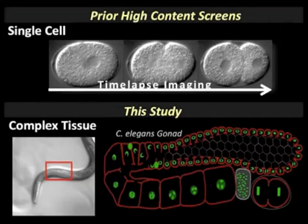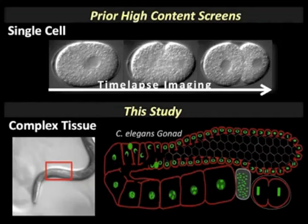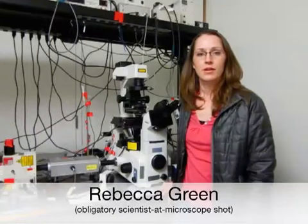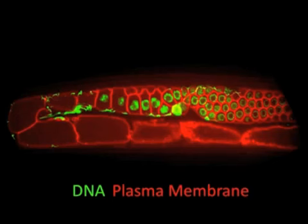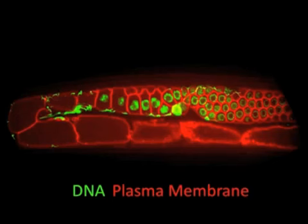The tissue we chose is the C. elegans reproductive organ, or gonad, which we image at a single time point following gene knockdown. Gonad architecture depends on the coordination of a broad spectrum of basic cellular processes, making it an ideal substrate for phenotypic profiling. For the screen, worms were soaked in RNA corresponding to the target gene, allowed to recover on food for 48 hours, and anesthetized for imaging.